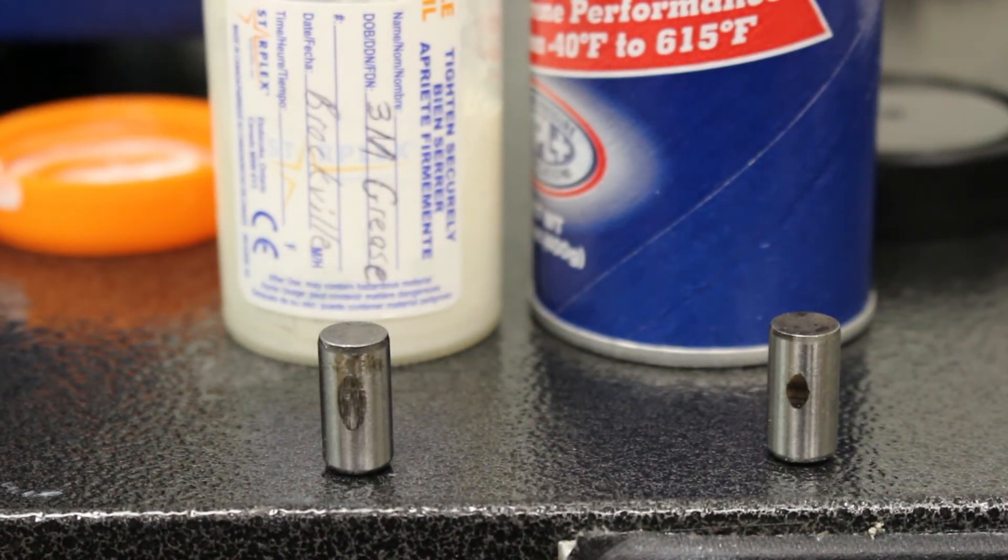Okay, here you will observe the two products that were tested. On the left was the 3M grease, which is the Kluber, which was able to withstand about 250 inch pounds of pressure, which is equivalent to 4,000 pounds per square inch.